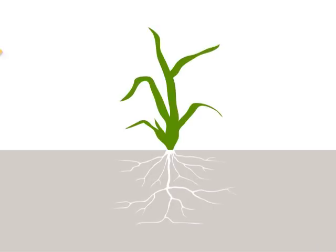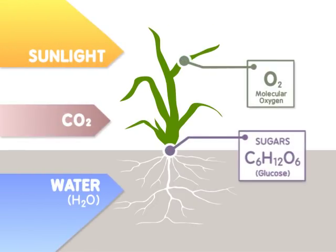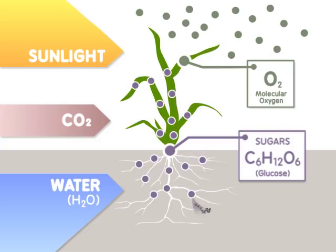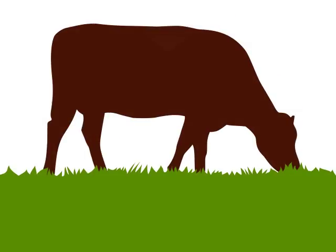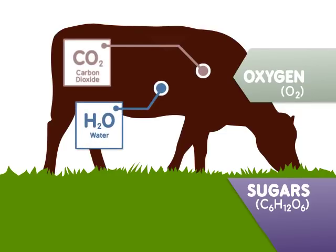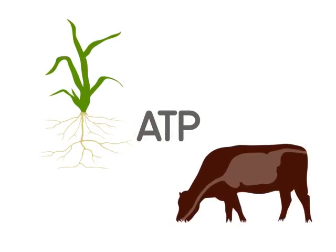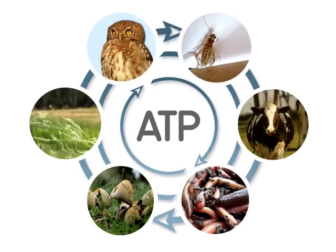Plants use sunlight, water, and carbon dioxide to produce sugars and oxygen. The oxygen is released into the atmosphere, while the sugars are used by plants to make ATP. When an animal consumes a plant, sugars from the plant and oxygen from the air are converted to carbon dioxide and water, and ATP is made. ATP is a critical energy molecule for both plants and animals — it drives many biochemical reactions within all organisms.